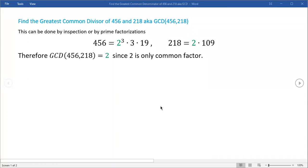I just want to show you how to find the greatest common divisor of two natural numbers. In this case, they're the numbers 456 and 218. They're both even numbers. Now, in many cases, people just do this by inspection. It's called the GCD, the greatest common divisor.